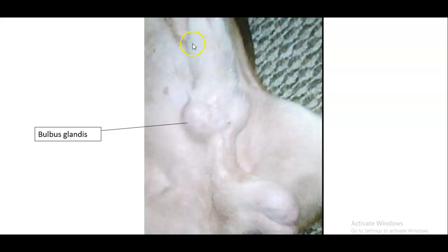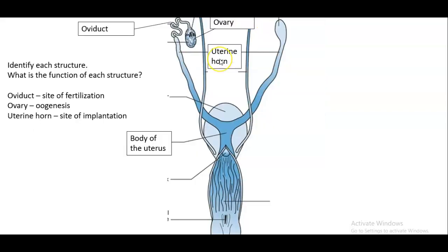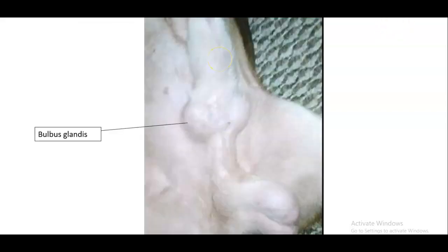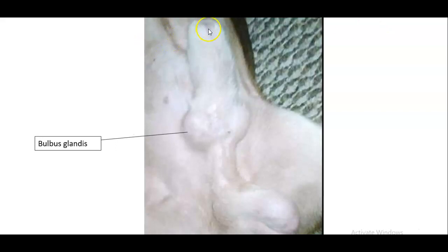Well, we've got the prepuce, which is the covering, the skin covering to the penis. I'll just push that up a little. So you have the opening of the prepuce to the penis. You've got the shaft within that.